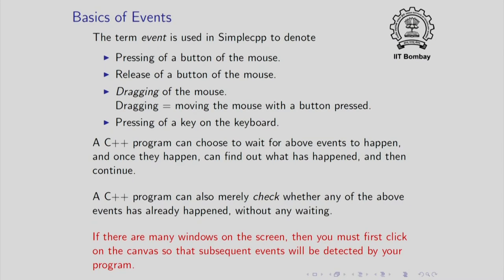If you have several windows on the screen, then you may be interacting with different windows. If you press a mouse button, that event may go to one of those windows. If you click on a certain window, then that window is set to get the focus, and subsequent mouse or keyboard events will be sent to the program running in that window. When we talk about events, we are assuming that your canvas has the focus.